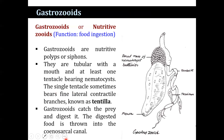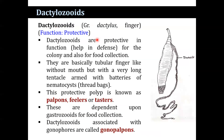Gastrozooids, also known as nutritive zooids, are the nutritive polyps or siphons. They are tubular with a mouth and at least one tentacle bearing nematocysts. A single tentacle sometimes bears fine lateral contractile branches known as tentilla. The gastrozooids catch prey and digest it; the digested food is then passed into the sinus circular canal. The function of gastrozooids is food ingestion.